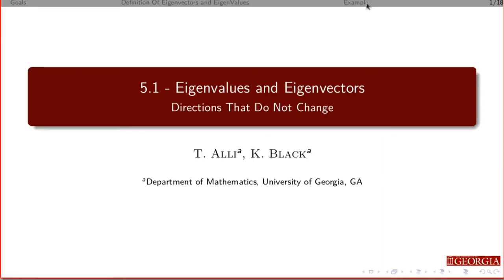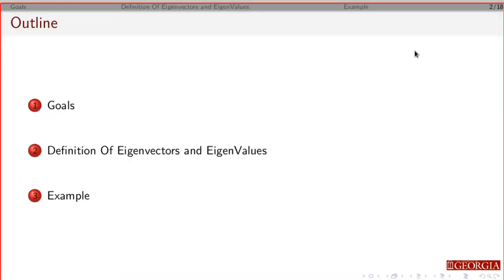We're going to do our first look at section 5.1, and basically we're going to look at the idea of eigenvectors and eigenvalues, focusing on an example to motivate why we're doing some of the things we're doing. The idea of eigenvalues and eigenvectors is kind of a strange thing, and it's not clear why we'd want to do this. So I'll state the goals — I'll define eigenvectors and eigenvalues and then focus on a single example.